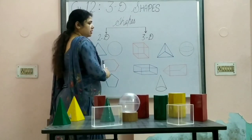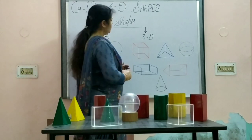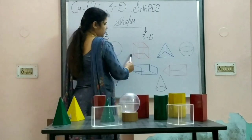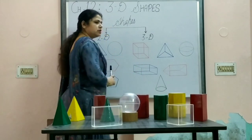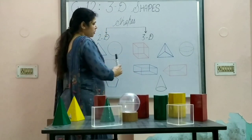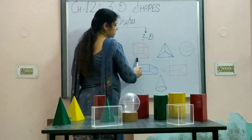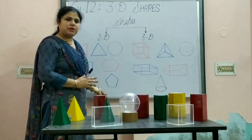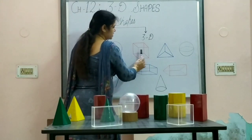Then what about 3D shapes? 3D shapes have length, breadth, and height. As you can see over here, the first shape that I have drawn is called a cube, because its length, breadth, and height — all three dimensions — are the same.